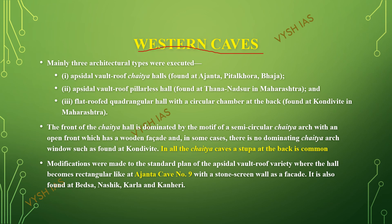Now let's see the caves of western India. Three architectural types were executed in the western region: the apsidal wall-roof chaitya halls, found in Ajanta, Pitalkora, and Bhaja; pillarless halls, found in Thana, Nadsur, and Maharashtra; and flat-roof quadrangular halls with a circular chamber at the back, found in Kondiviti, Maharashtra. The front of the chaitya hall is dominated by a semi-circular chaitya arch with an open front and wooden facade, though in some cases, like Kondiviti, the chaitya arch is not dominating.